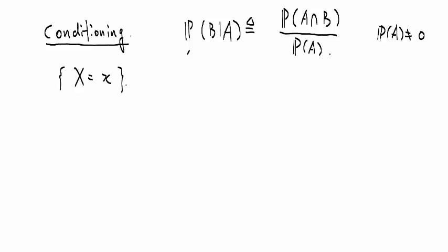This corresponds to all of those outcomes for which this random variable is assigned this small x value. We think of this as that event A. And we think of another random variable Y takes a value of small y. Let's call this event B.